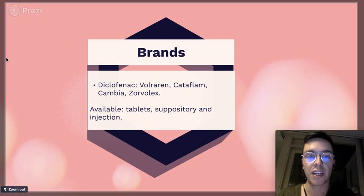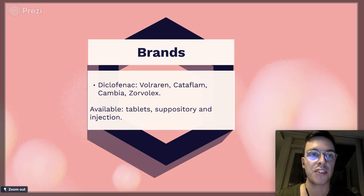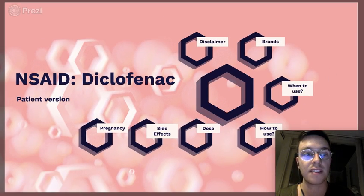Diclofenac is a generic name and it's commonly known under the brand names Cataflam, Cambia, Zovalex and there are some more. It's available as tablets, suppository and injections but it's mostly used as tablets.